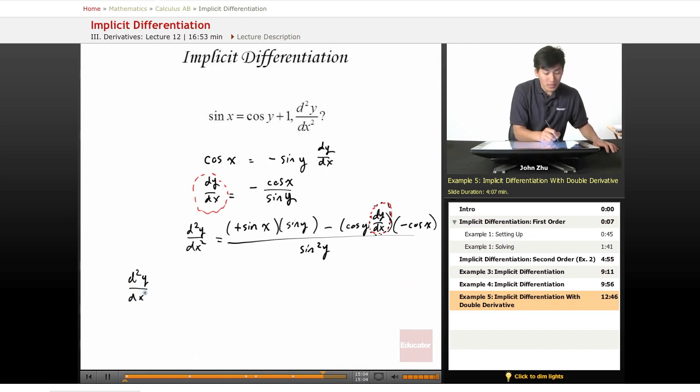d²y/dx² equals sine of x times sine of y minus, well, there's a negative term here, so we know that we're going to be adding, but then we replace this dy/dx and there's another negative term, so three negatives equals one negative.